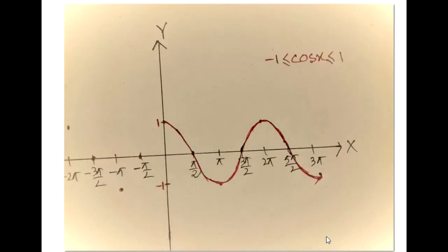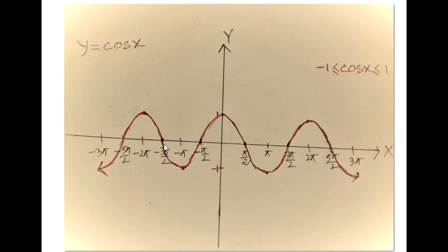Now, as with the curve of sin x, I add those points. Because from 0 to pi over 2, the value of cos x is decreasing and it is not equally decreasing, so it is like a curve. Similarly for the left side, I will add those points with this curve, and it will be the graph of y equals cos x.